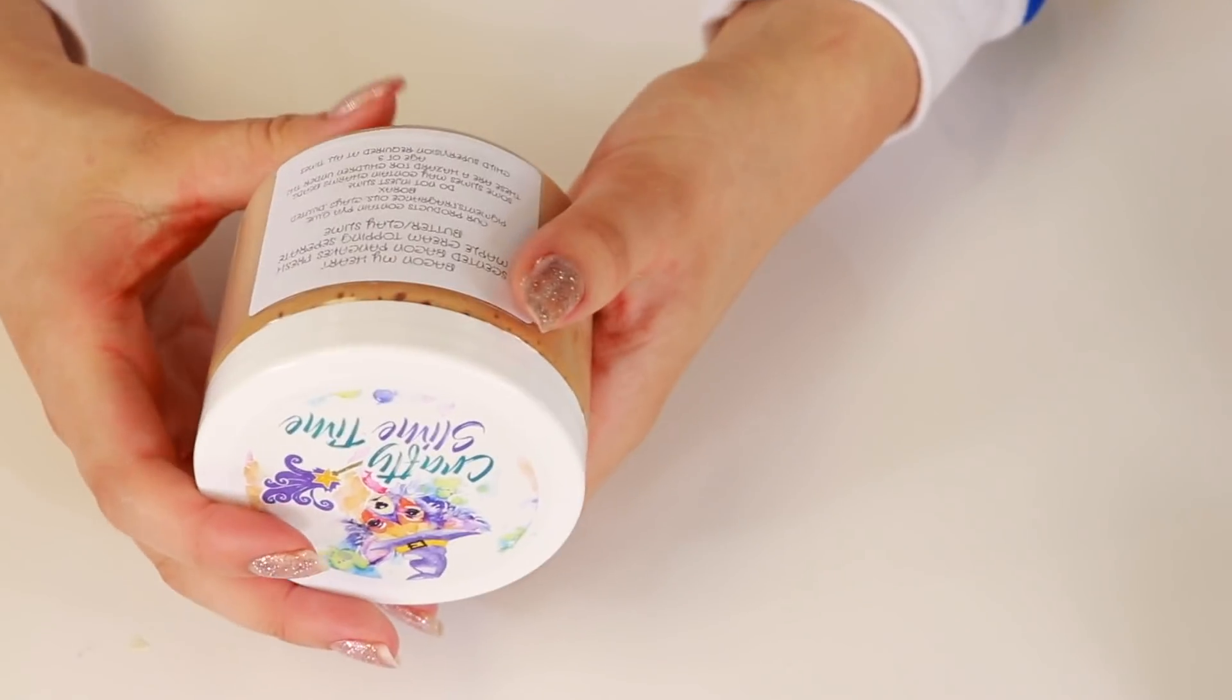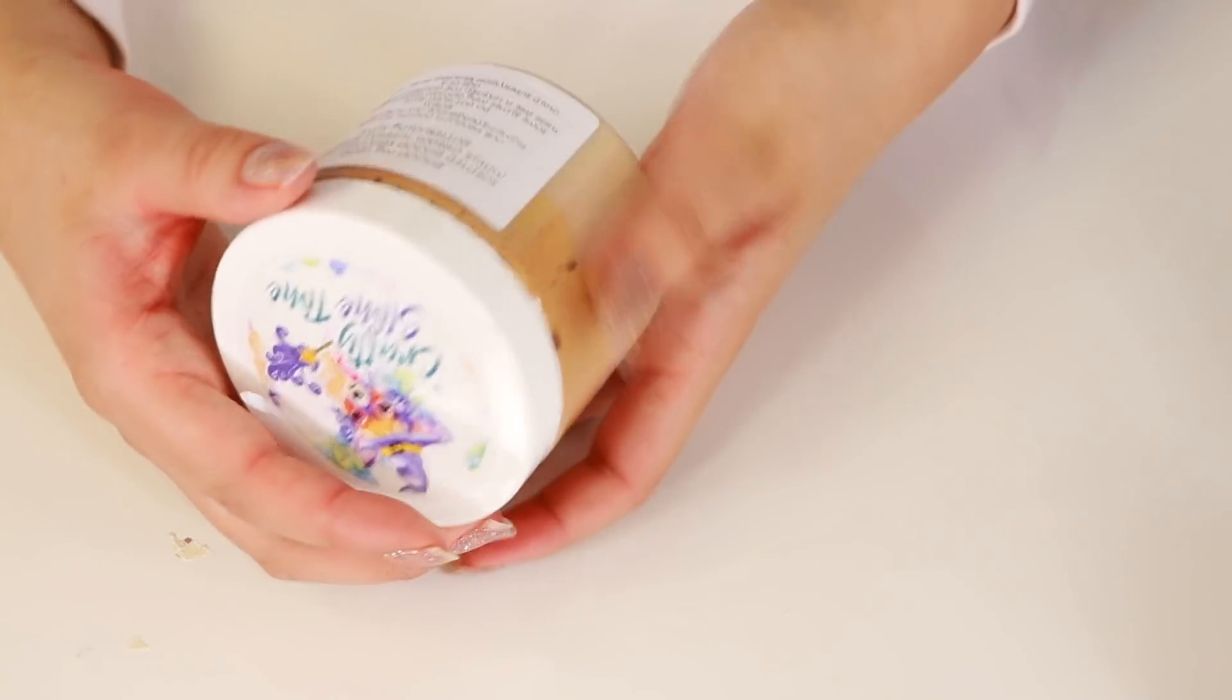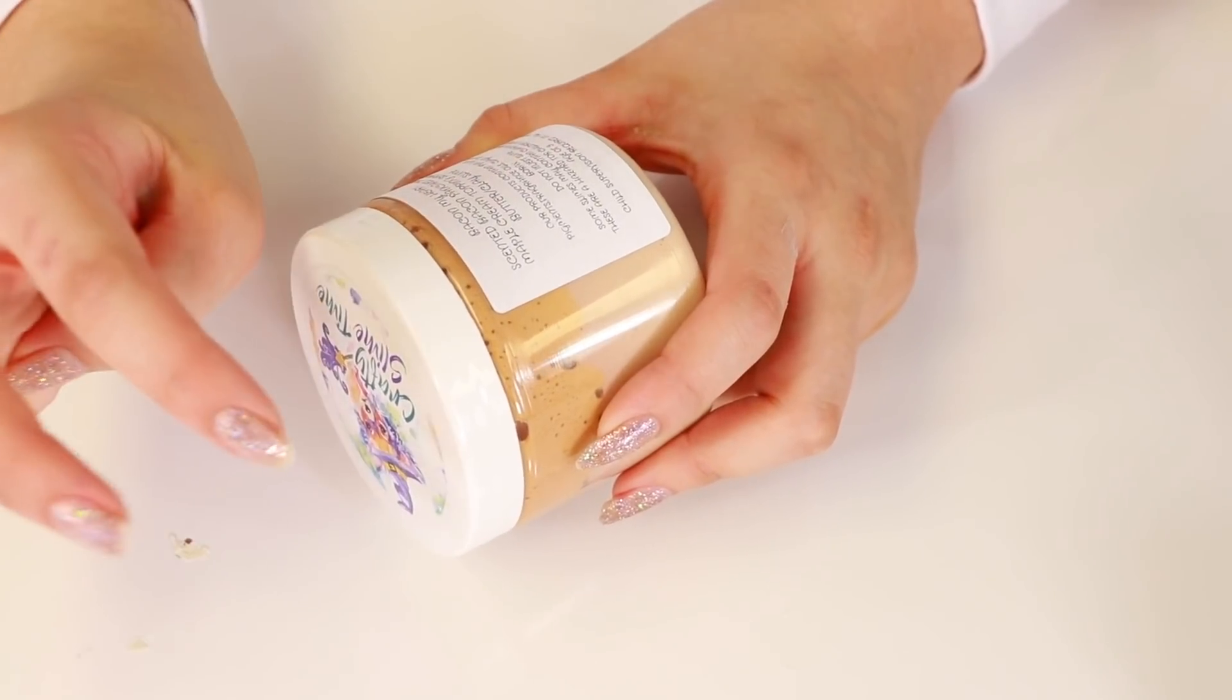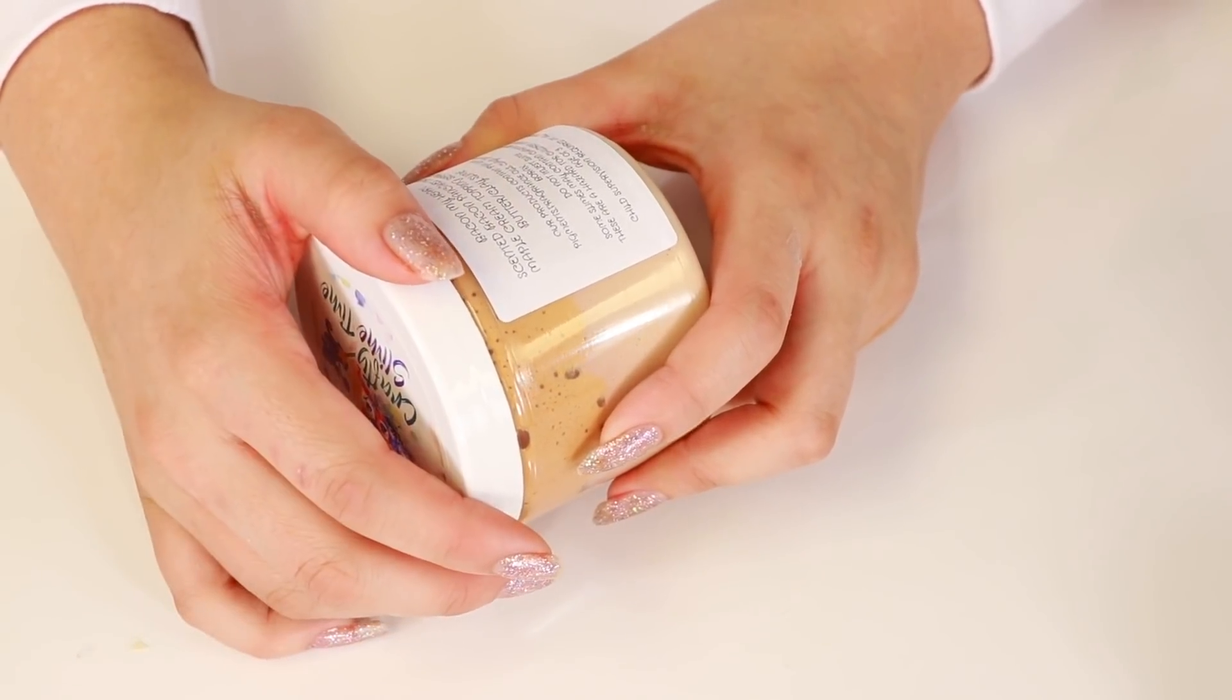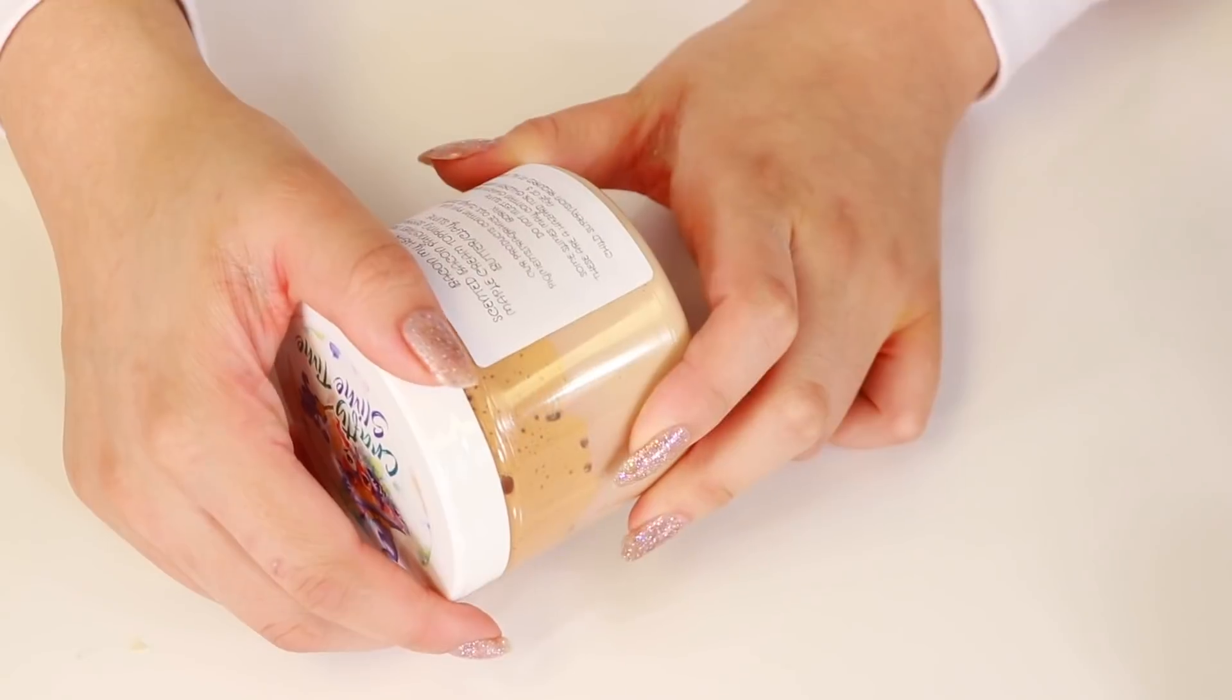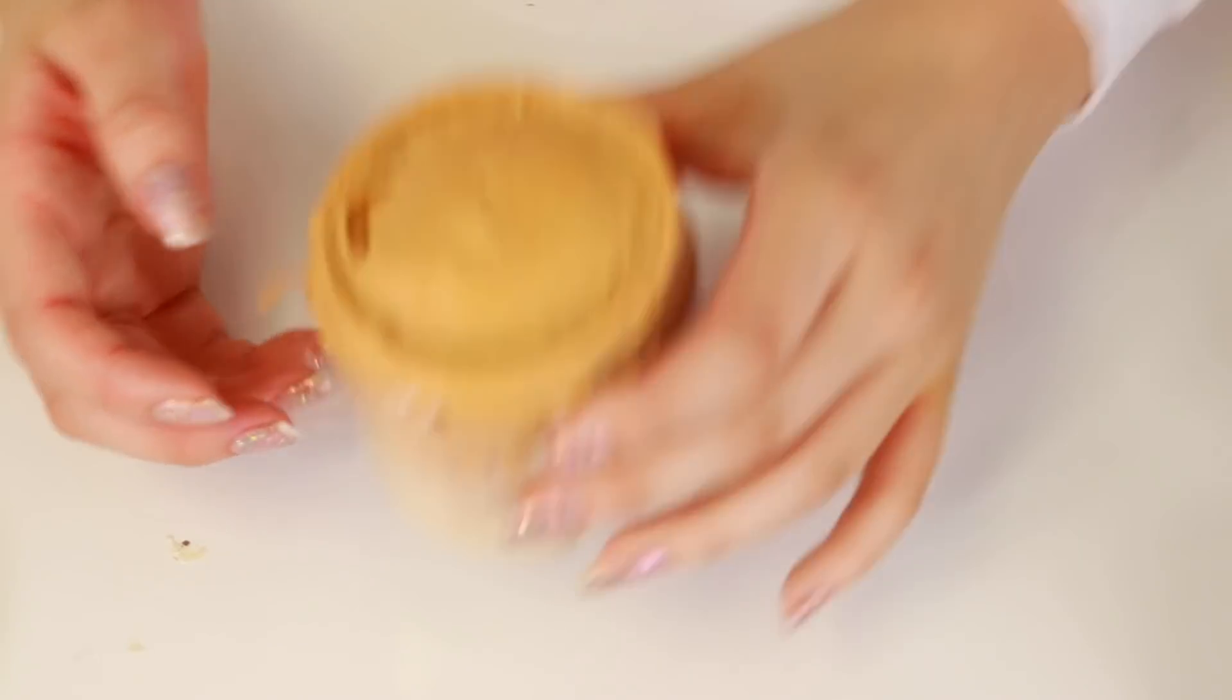Next one is- This one is- Bacon my heart. Okay. Do we have some bacon-themed slime? This one is- Okay, so it's bacon my heart. Scented bacon pancake fresh maple cream topping separate butter clay slime. Oh. It's a butter and a clay slime. What does that mean? No. Okay. Maple cream topping separate and then it has butter or slime. Okay. Sounds good.